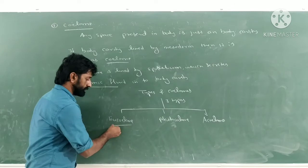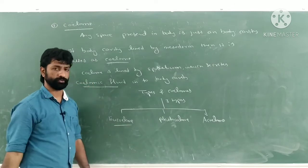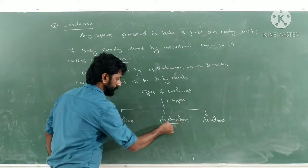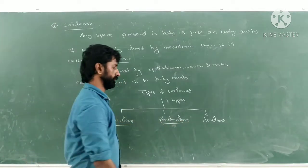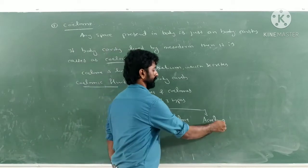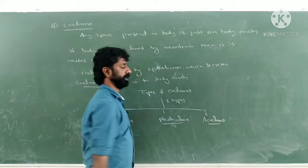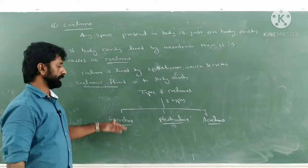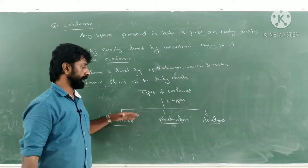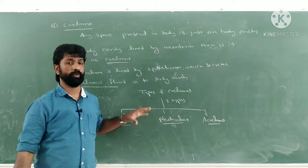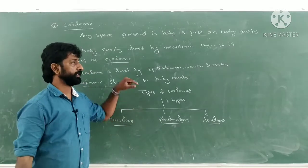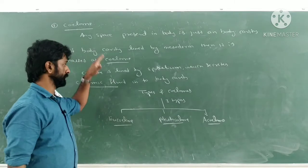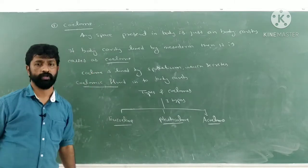What do we mean by eucoelom or true coelom? What do we mean by pseudocoelom or false coelom? And what is acoelom, the absence of body cavity? Let us understand each one by one with a diagrammatic representation.